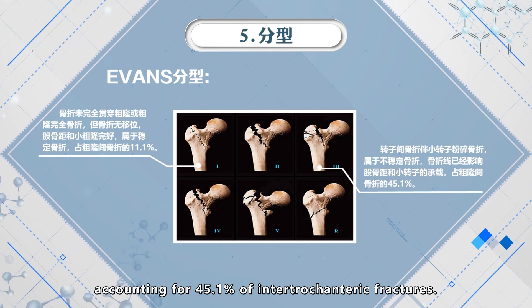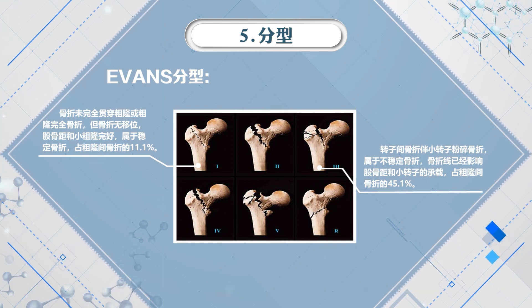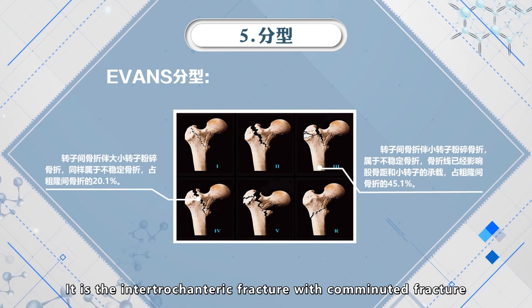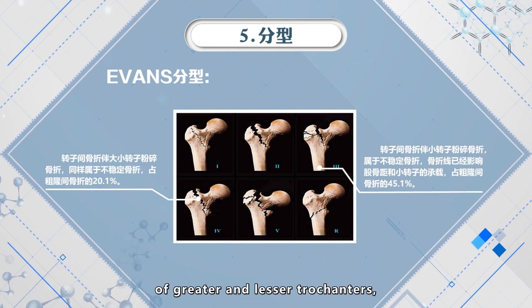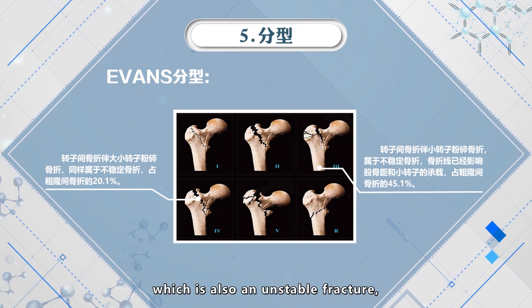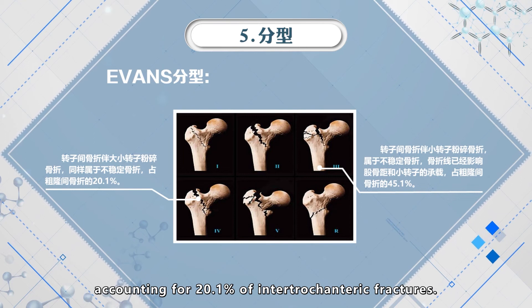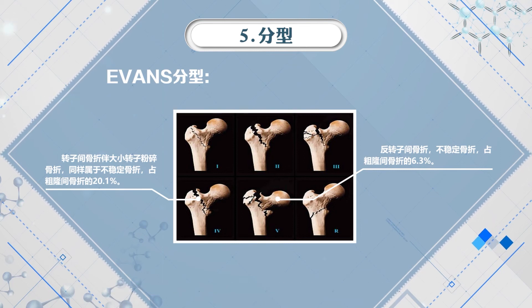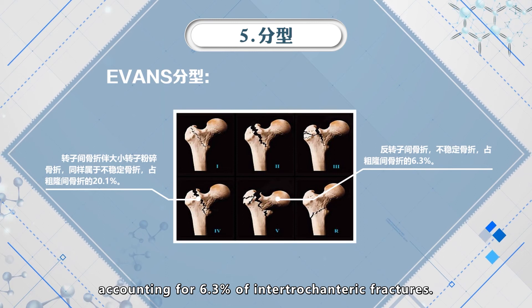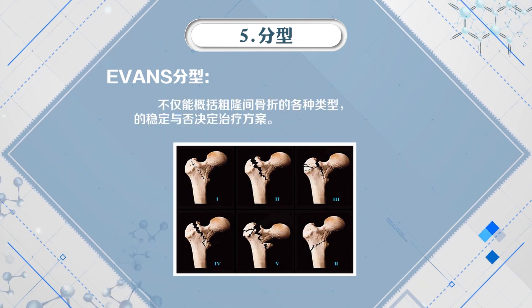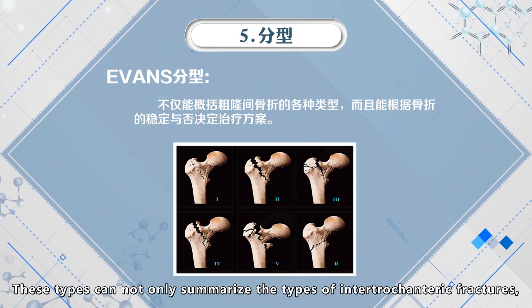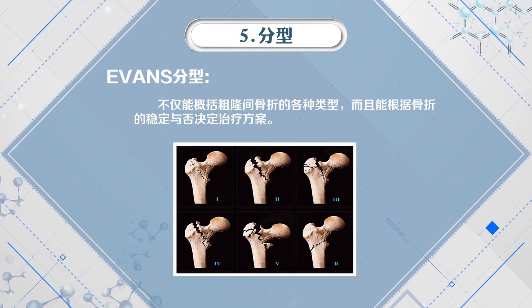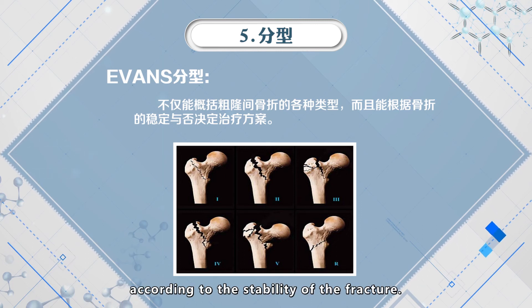Type 4 is the intratrochanteric fracture with comminuted fracture of the greater and lesser trochanter, which is also an unstable fracture, accounting for 6.1 percent. Type 5 is the reverse obliquity intratrochanteric fracture, which is an unstable fracture accounting for 6.3 percent. These types can not only summarize the types of intratrochanteric fractures but also help decide the treatment program according to the stability of the fracture.